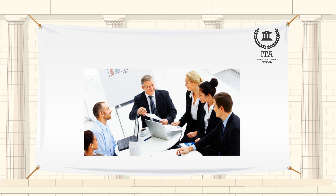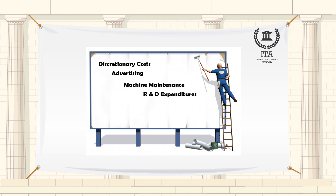Discretionary fixed costs usually arise from annual decisions by management to spend on certain fixed cost items. Examples of discretionary costs are advertising, machine maintenance, and research and development expenditures. Discretionary fixed costs can be expensive.